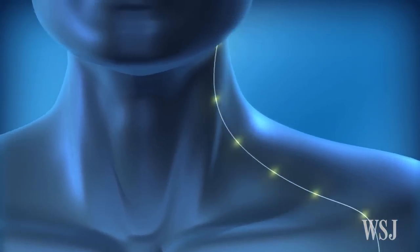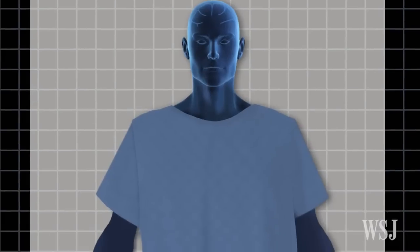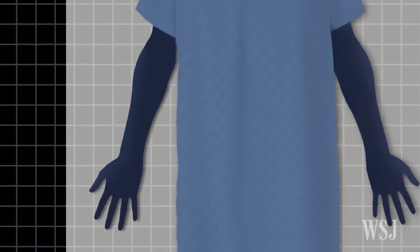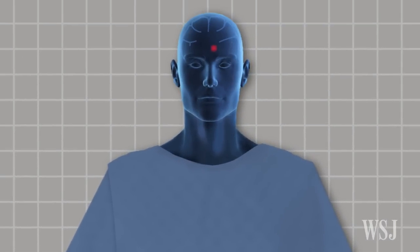Then doctors turn on the lead, sending an electrical current to the brain. The patient, now awake, may be asked to move an arm, for example, so doctors can ensure that electrodes are precisely placed.